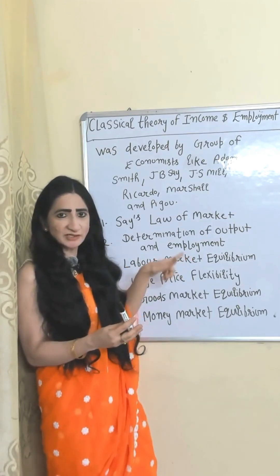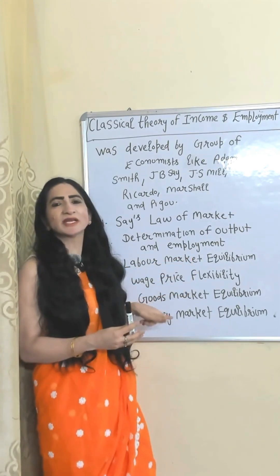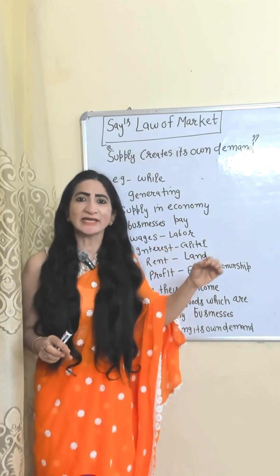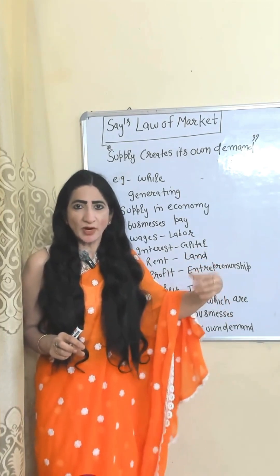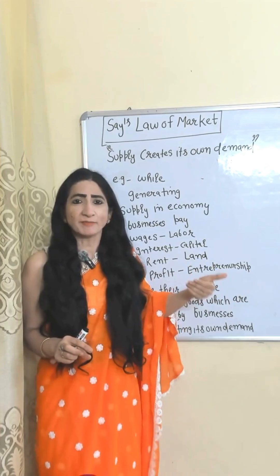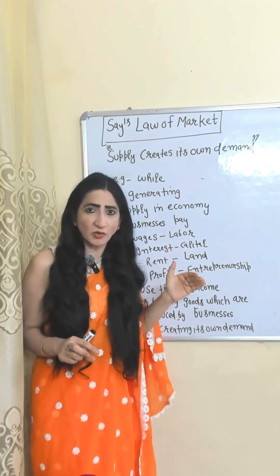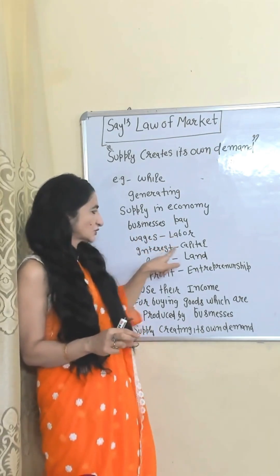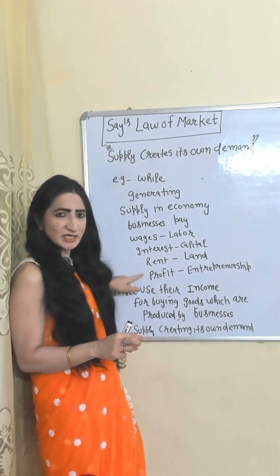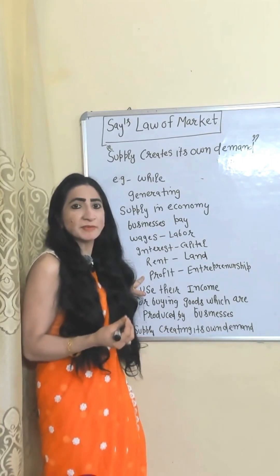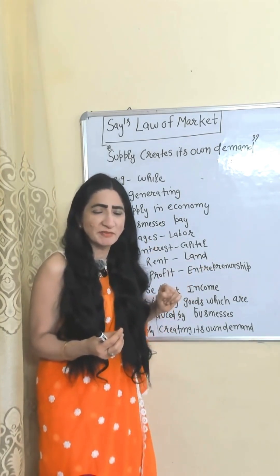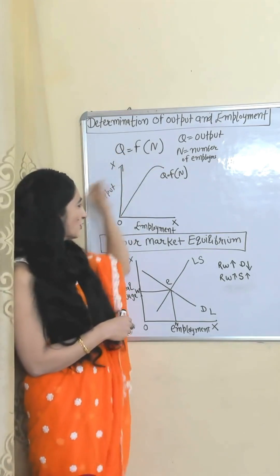According to Say's Law of Market, supply creates its own demand — whatever goods we produce will be demanded, so there is no problem of overproduction. For example, while generating supply, businesses pay wages to labor, interest to capital, rent to land, and profit to entrepreneurship. These become people's income, with which they buy the goods produced by businesses, so supply creates its own demand. As the number of employees increases, output also increases.